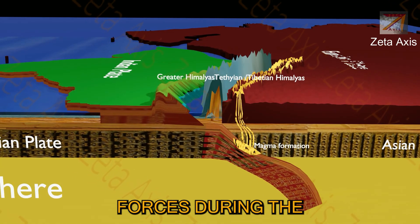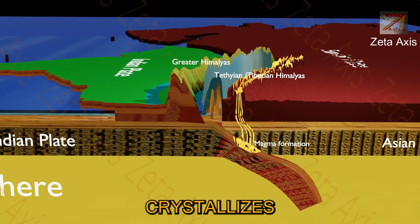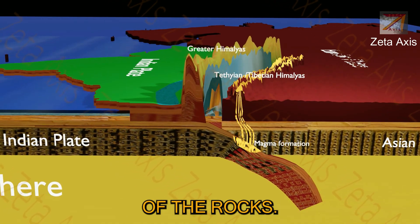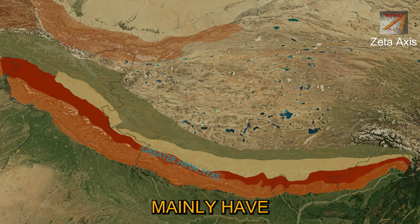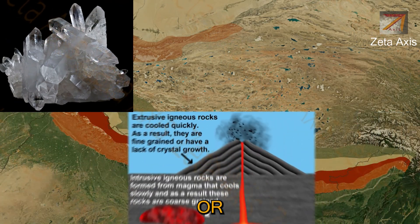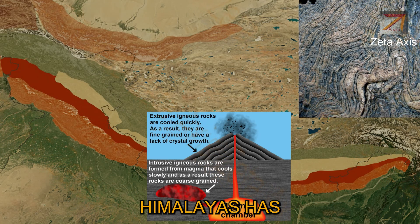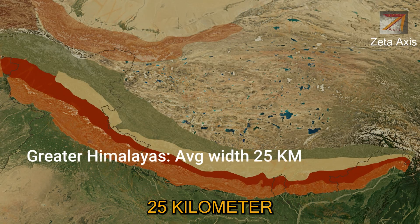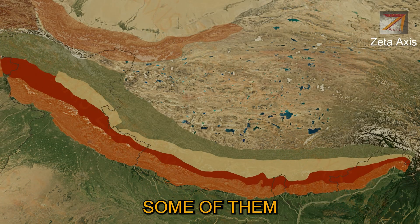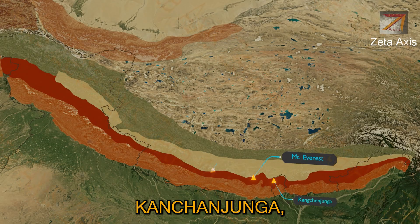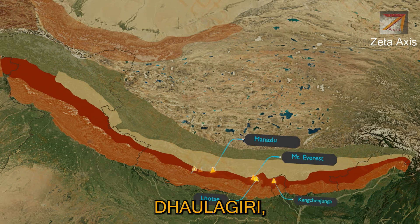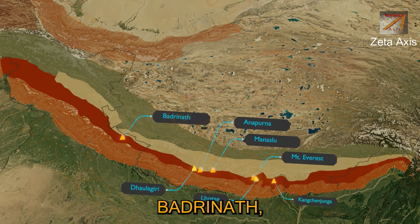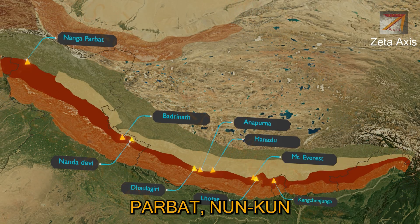The Greater Himalayan rocks experienced very heavy compressive forces during upliftment, causing crystallization and metamorphosis of the rocks. Therefore the Greater Himalayas mainly have crystalline, igneous, or metamorphic rocks. Greater Himalayas has an average height of 6100 meters and is 25 km wide. It is home to some of the loftiest mountains in the world, including Mount Everest, Kanchenjunga, Manaslu, Lhotse, Dhaulagiri, Annapurna, Badrinath, Nanda Devi, Nanga Parbat, and Nun Kun mountains.